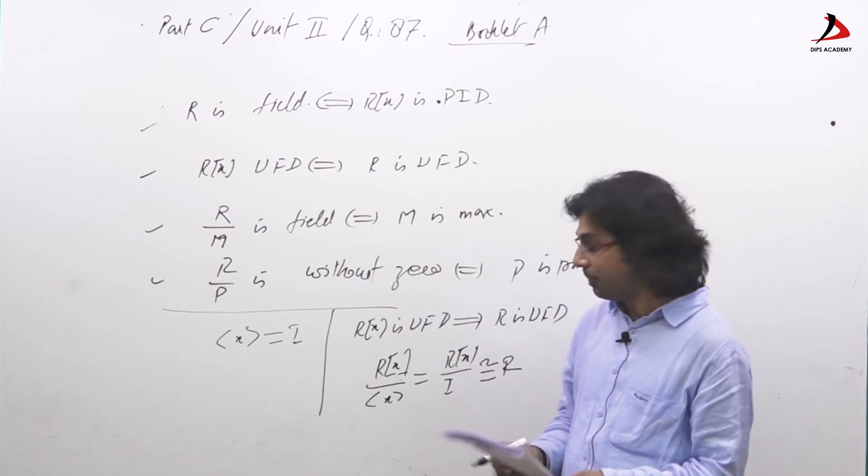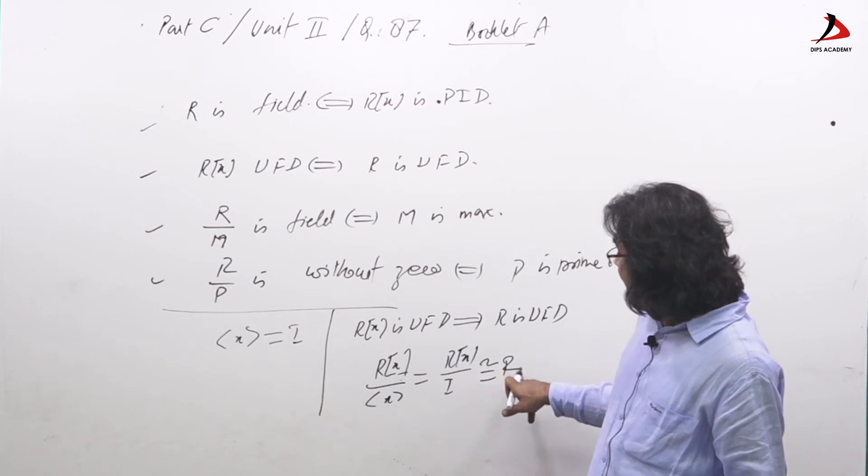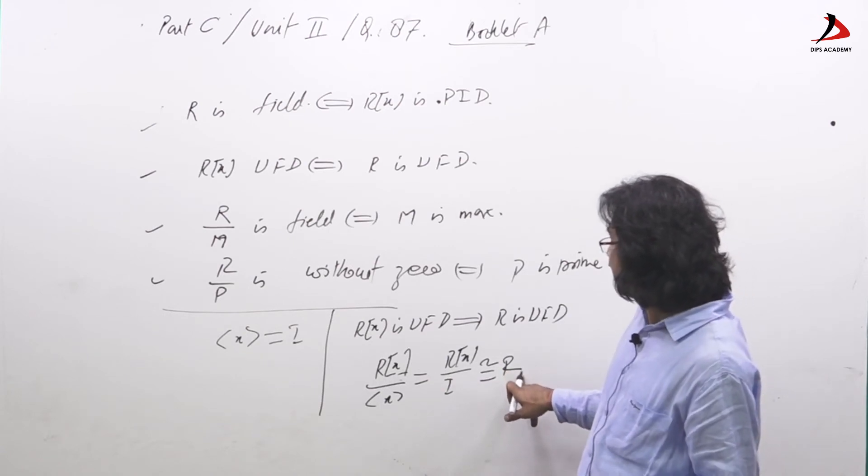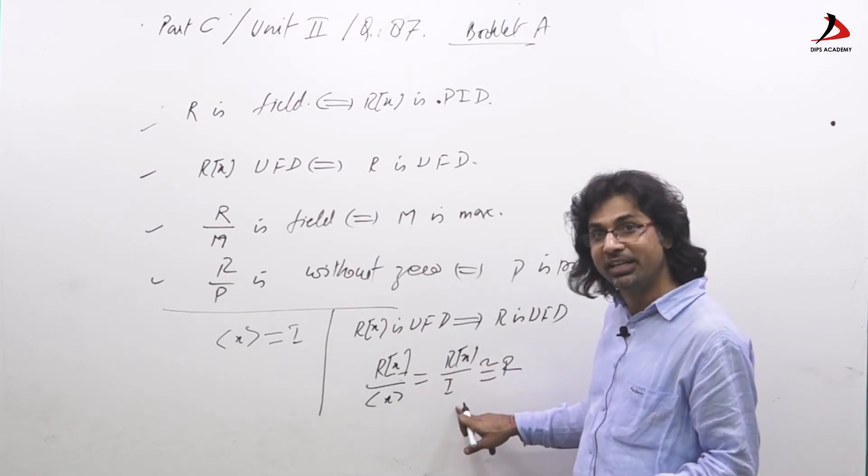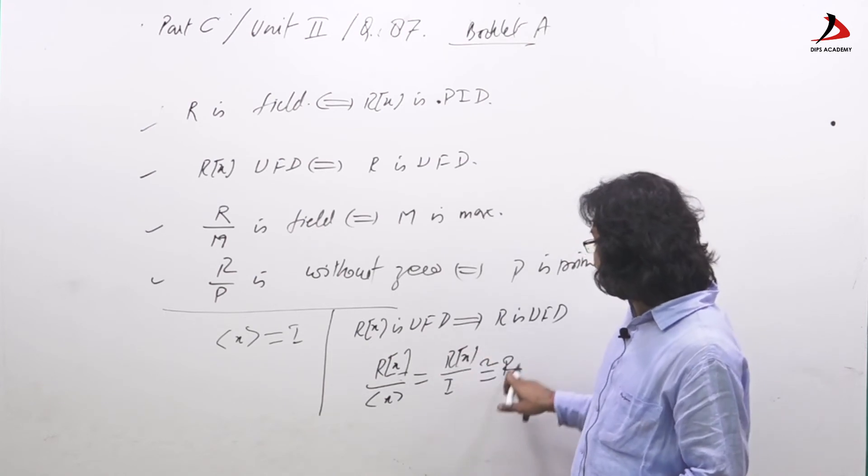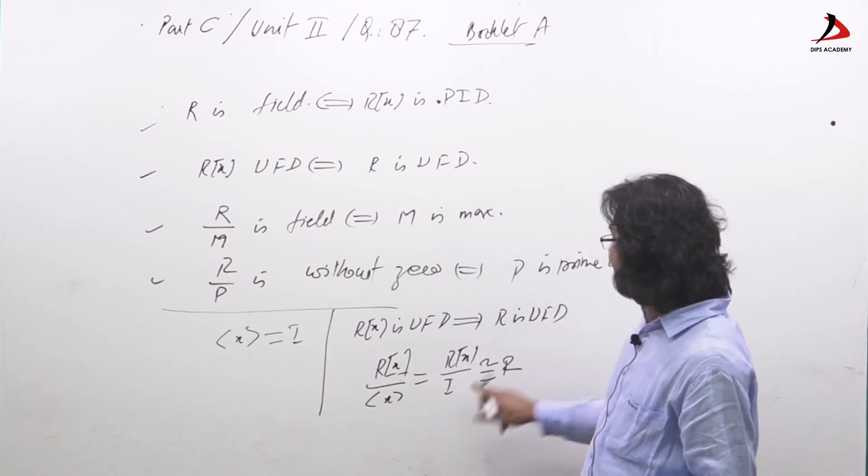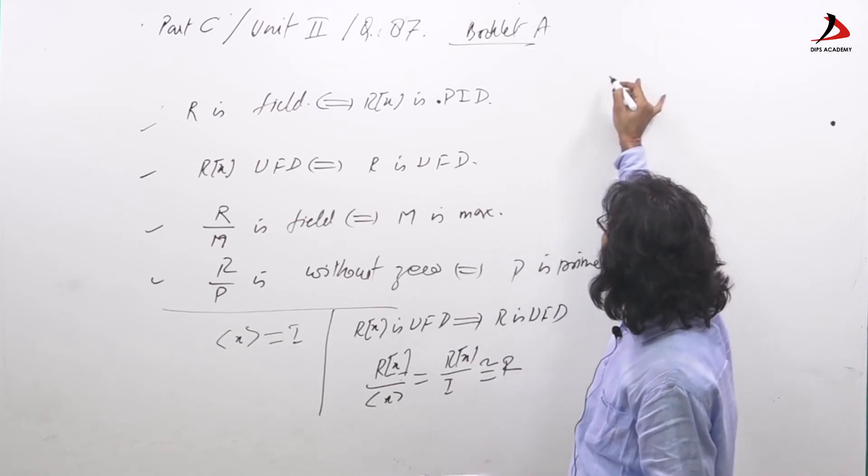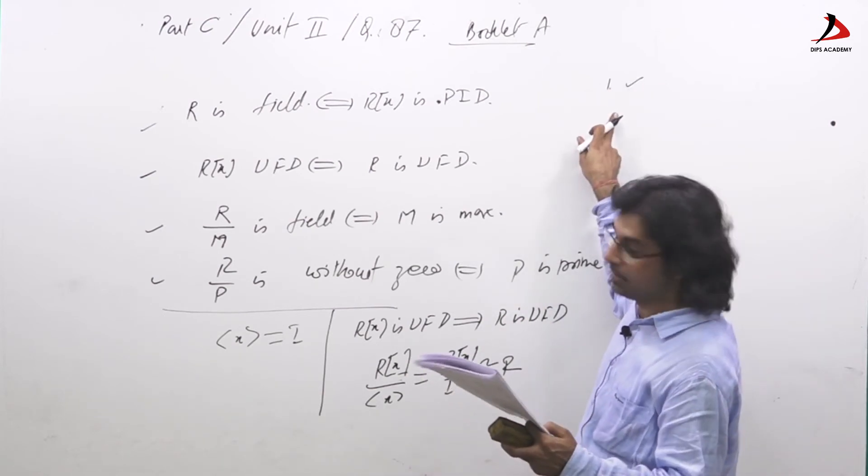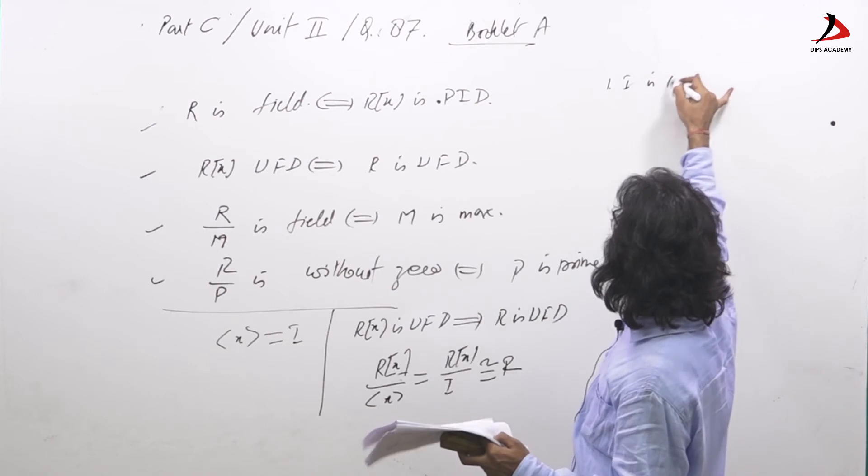First option, I is prime. Certainly, R is UFD, so Rx over I is UFD. So Rx over I has no zero divisor, hence I is prime. Option one correct, which says I is prime.